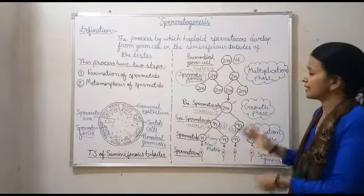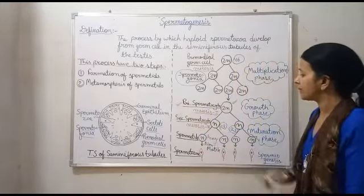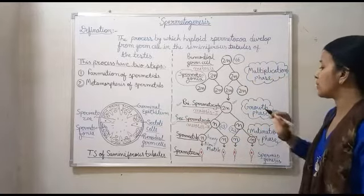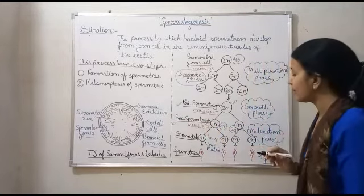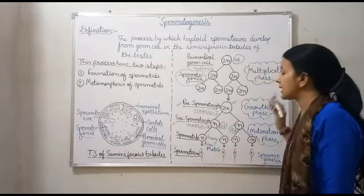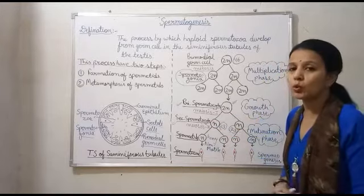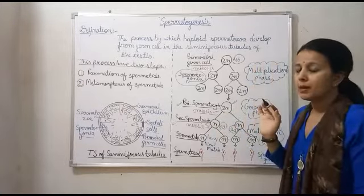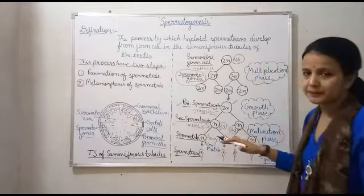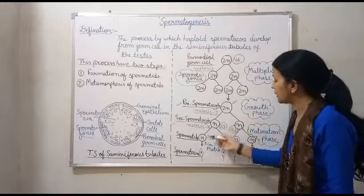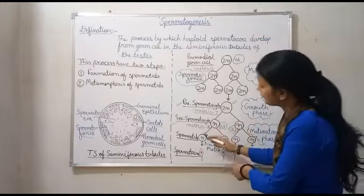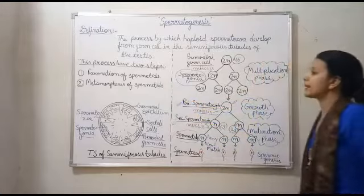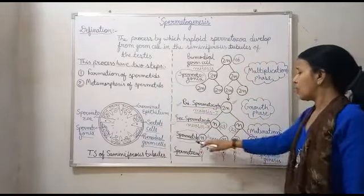एक question clear हो गया है। अब secondary spermatocyte में फिर से second meiotic division होगा। याद रखना कि अब chromosome number half नहीं होगा, क्योंकि reductional division meiotic first के अंदर होता है। Meiosis second, mitotic division के equal होता है, so chromosome number remaining same — 23 यहाँ 23। Secondary spermatocyte form करती है spermatids को। Spermatids यहाँ form हो गए, तो formation of spermatids वाला topic clear हो गया, और maturation phase भी complete हो गई।